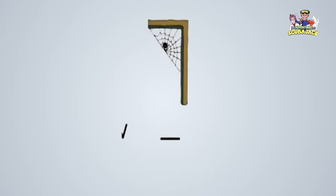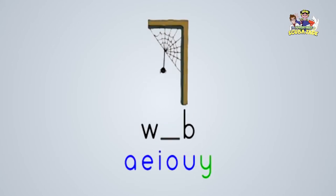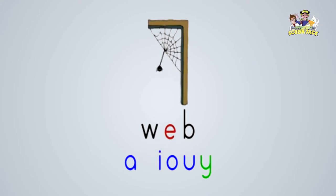This is a web. Can you say web? Web. What is the missing vowel? That's right. The missing vowel is E. Very good.